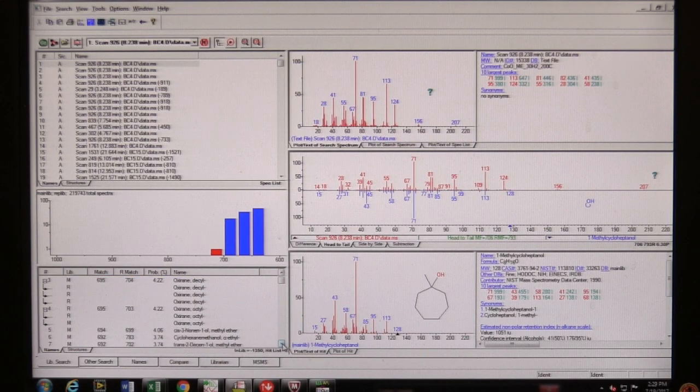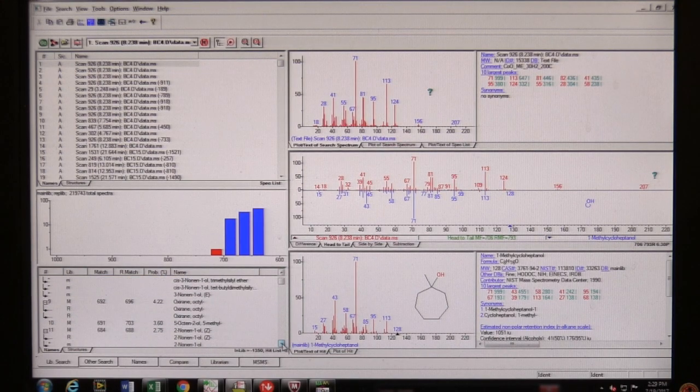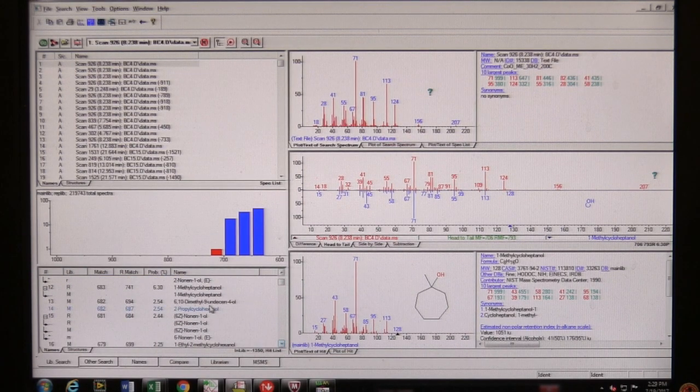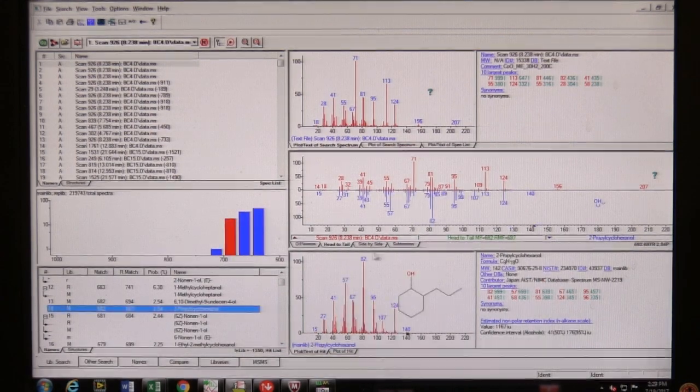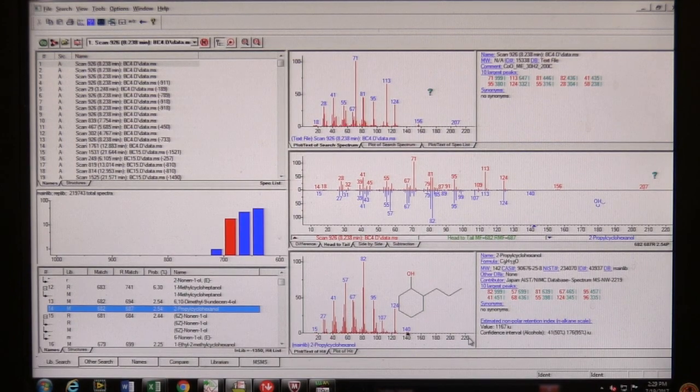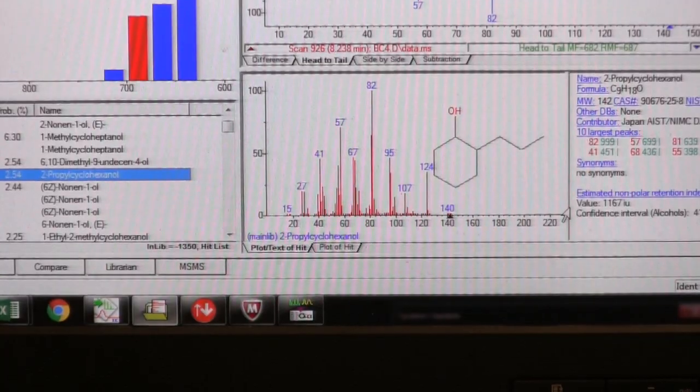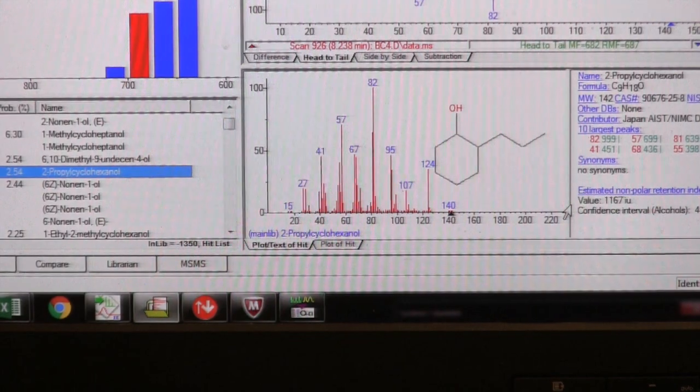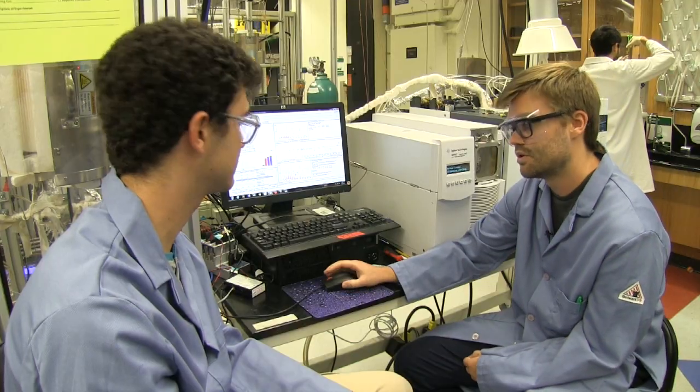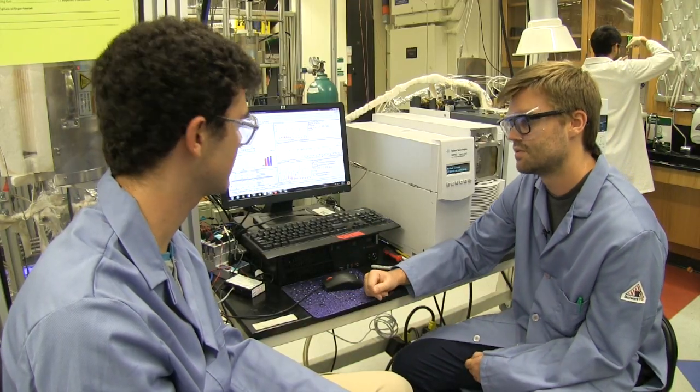So this is a good example of a ring that would not be formed in our reaction. So if I scroll through here, I can maybe find one that is much more probable, like this propylcyclohexanol, which is really similar to the starting compound that we used.